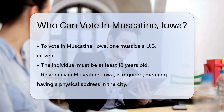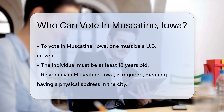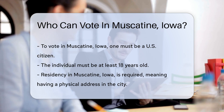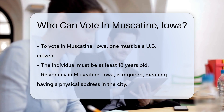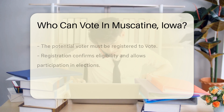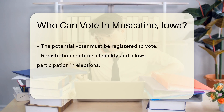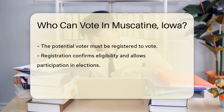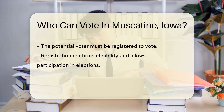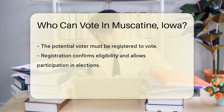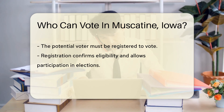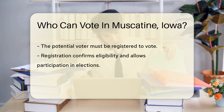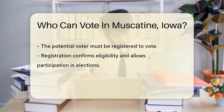Additionally, the individual must be at least 18 years old. This age requirement ensures that voters are legally adults. Residency is another key factor — a person must be a resident of Muscatine, Iowa, meaning having a physical address in the city. Furthermore, the potential voter must be registered to vote. Registration is a process that confirms eligibility and allows participation in elections.